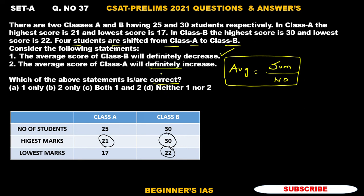We cannot be sure about the marks of the four students that have moved from class A. They may have scored the maximum mark, that is 21, in which case it leads to a decrease in the average of class A. If they have marks close to 17 or equal to 17, it will surely lead to an increase in the class A average. Therefore, we cannot say that the average of class A will either definitely increase or definitely decrease.